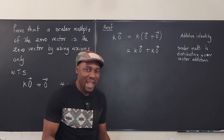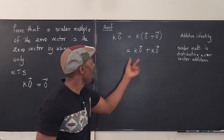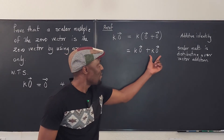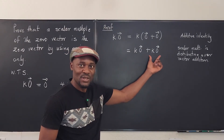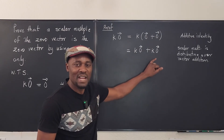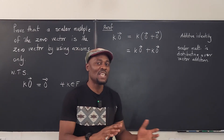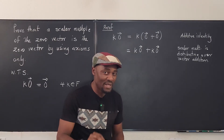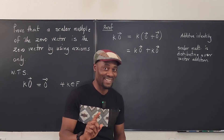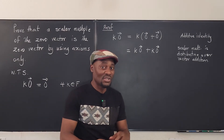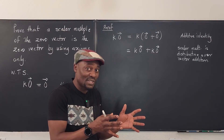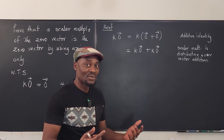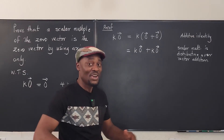So what do I do next? I'm looking for the zero vector to show up eventually. What I'm going to do is try to get rid of one of these terms. To get rid of a vector, recall that in a vector space there is always another vector such that when you add those two vectors together you get the zero vector.